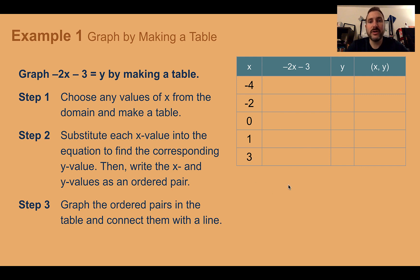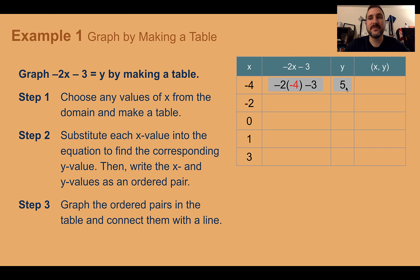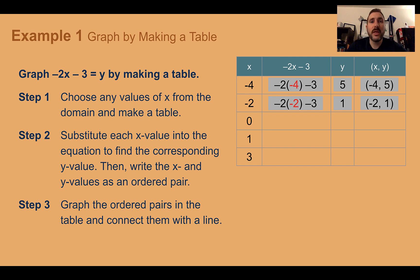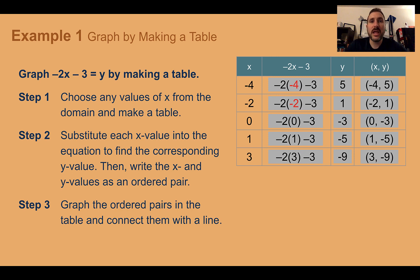They gave us some values to use: negative 4, negative 2, 0, 1, and 3. We're going to plug each of those into our equation to equal y. If we plug in negative 4, we get negative 2 times negative 4, which is positive 8, minus 3, we get 5. So if we plug in x as negative 4, we get y as 5, making the coordinate negative 4, 5. Doing the same for negative 2, we get 1 for y, making our coordinate negative 2, 1. Plugging in 0, we get negative 3. Plugging in 1, we get negative 5. Plugging in 3, we get negative 9.